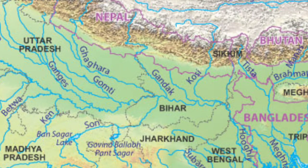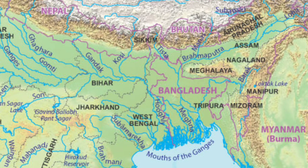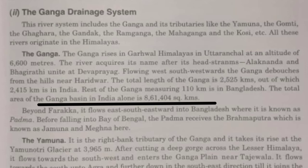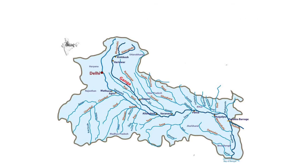River Ganga then drains into Bihar and into West Bengal. In West Bengal, the river divides into the Hooghly River and the Padma River. The Padma enters Bangladesh, and before draining into the Bay of Bengal, it joins River Brahmaputra, creating the largest delta in the world. Ganga has the largest basin in the Indian subcontinent, around 861,404 square kilometers. A river basin is the area covered by the river and its tributaries.